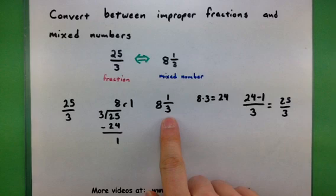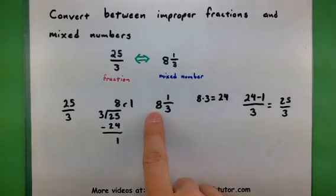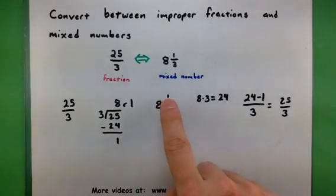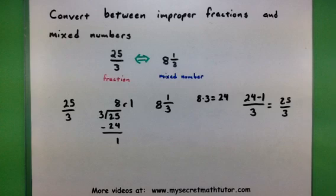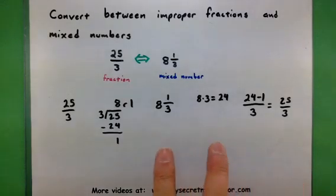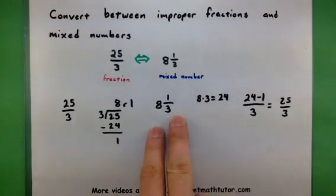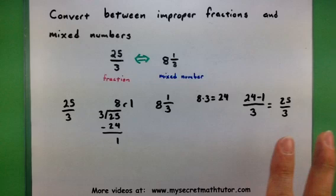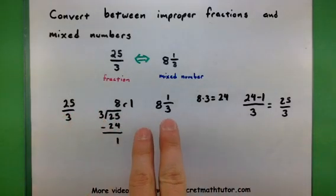So let's review that process again. You take the denominator, you multiply it by your whole number out front, and then you add it to the top. And that basically gives you a process to move from the mixed number into the improper fraction, or even from the fraction into the mixed number.